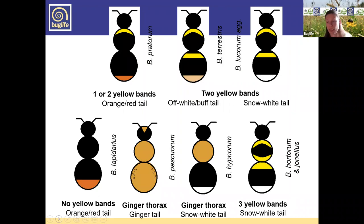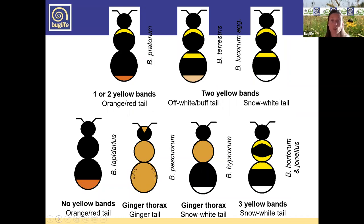Queens are a really good place to start identifying bumblebees. We've got a diagram from the Bumblebee Conservation Trust showing what we're looking for in our queens — different numbers and colors of bands on the thorax and abdomen, and different color tails.